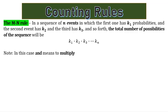In a sequence of events, the first event has K1 possibilities, the second has K2, the third has K3, and so forth. The total number of possibilities of this sequence will be K1 × K2 × K3 × ... × KN, where N means to multiply.